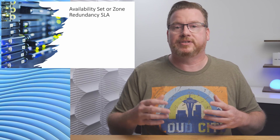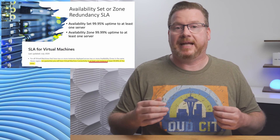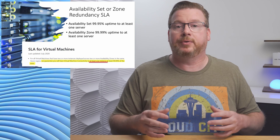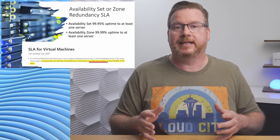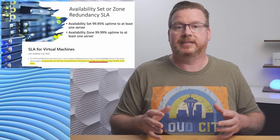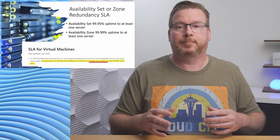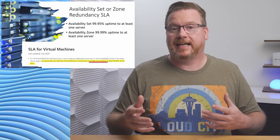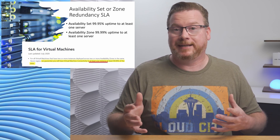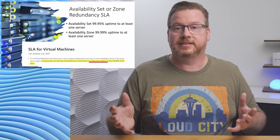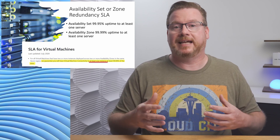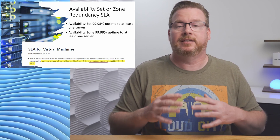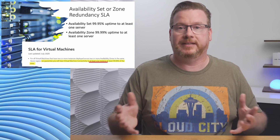Know the SLA for the services you deploy. The VM SLA for an availability zone guarantees 99.99% availability to at least one instance deployed to availability zones — that's not 99.99% availability to all instances, it's 99.99% to at least one instance deployed to availability zones.